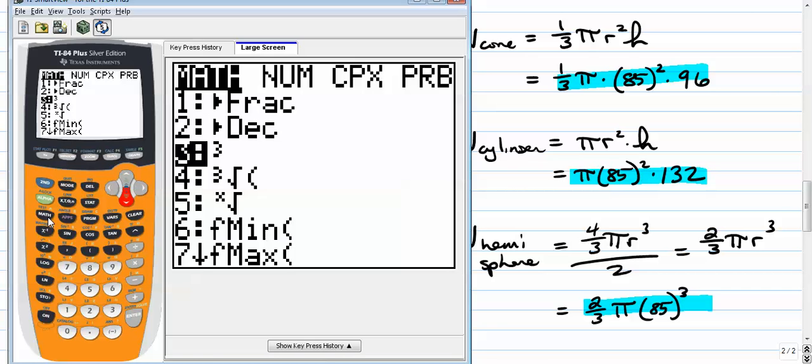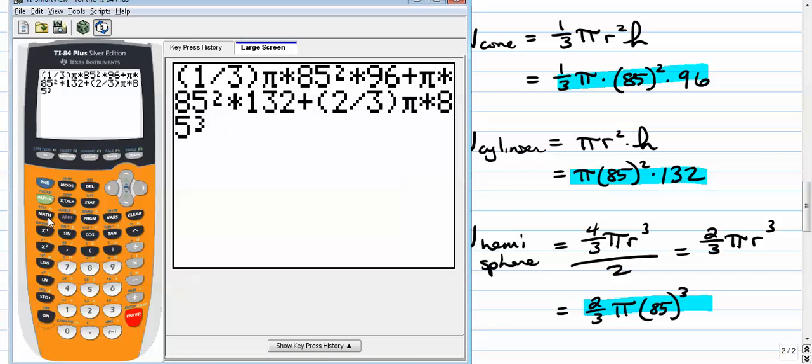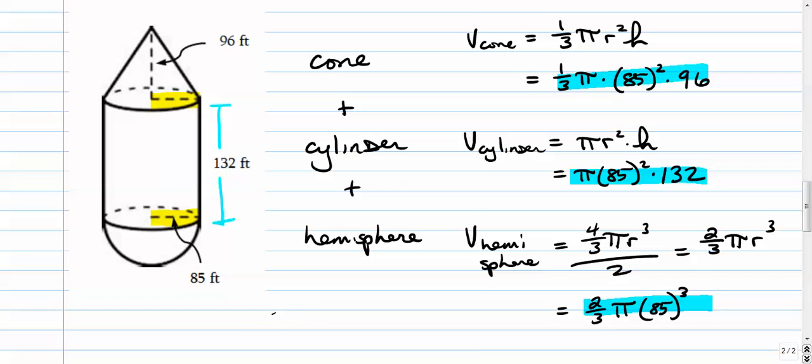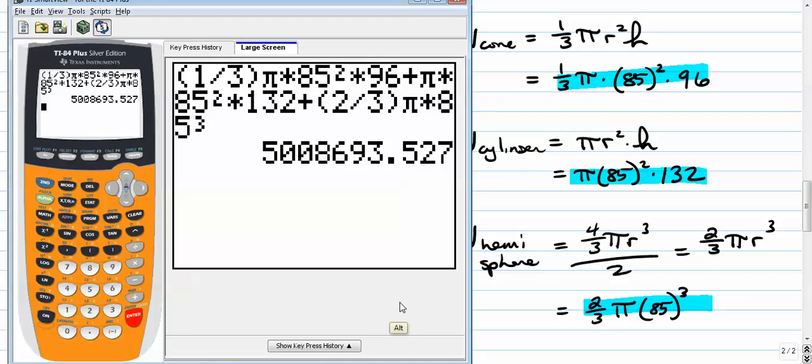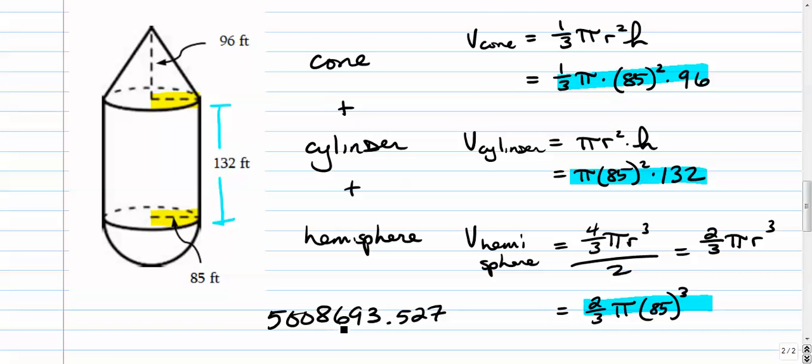Check it over, make sure we haven't made any mistakes before we get our final answer. One third pi, 85 squared, 96, plus pi, 85 squared, 132, plus two thirds pi times 85 to the third power. Looks good. Real big number: 5,008,693.527. So that is the volume of the entire thing. That's quite a calculation right there.